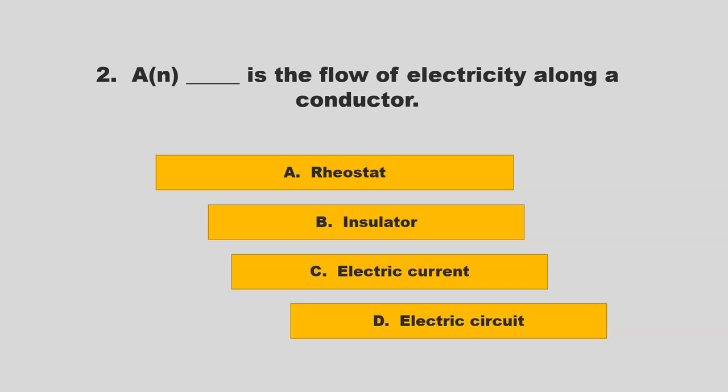A blank is the flow of electricity along a conductor. Is it rheostat, insulator, electric current, or electric circuit? If you chose C, electric current, you are correct.